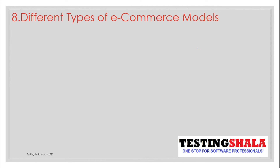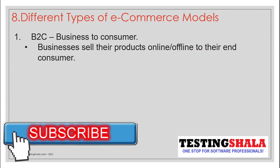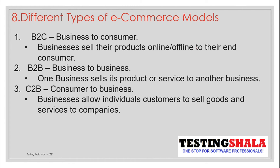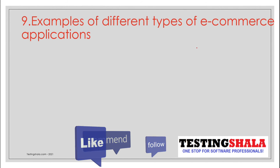The eighth important interview question is: can you name some e-commerce models? The first is Business to Consumer (B2C), where businesses sell their products online and offline to end customers. The second is Business to Business (B2B), where one business sells to another. We also have Consumer to Business (C2B) and Consumer to Consumer (C2C), where consumers sell to other consumers using e-commerce platforms.